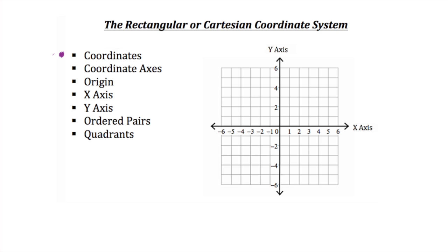A Cartesian coordinate system consists of two perpendicular number lines called coordinate axes, which meet at a common origin, zero. Typically, one of the number lines, called the x-axis, is horizontal, and the other, called the y-axis, is the vertical axis.